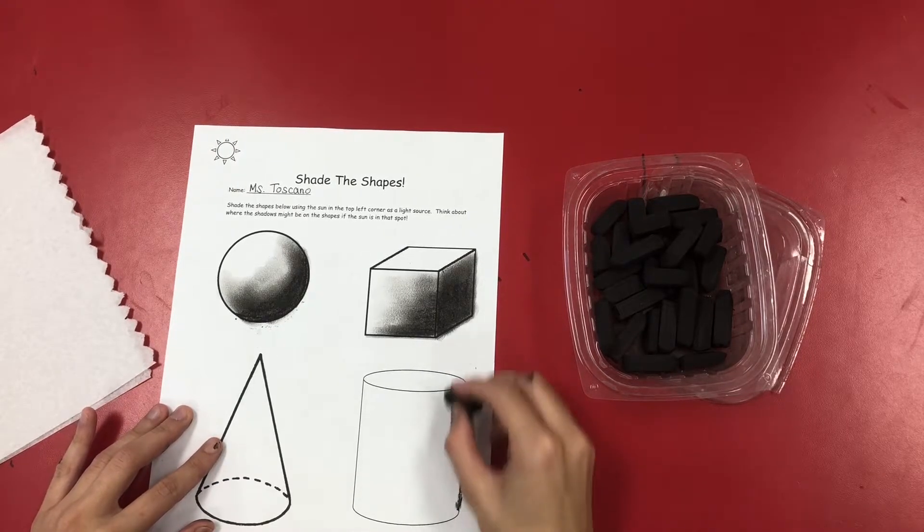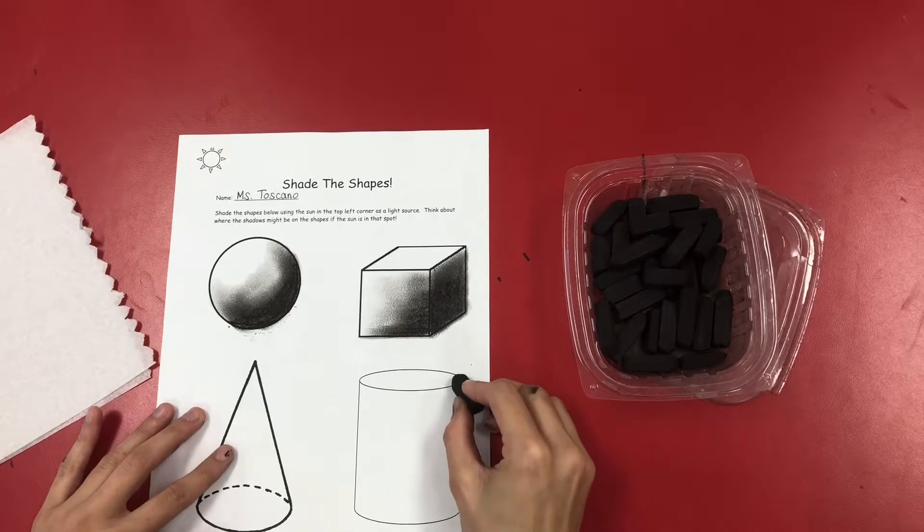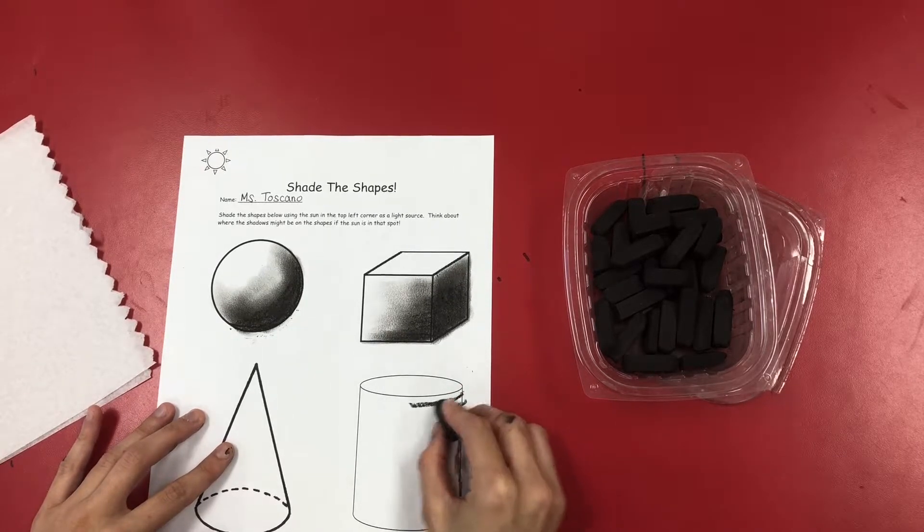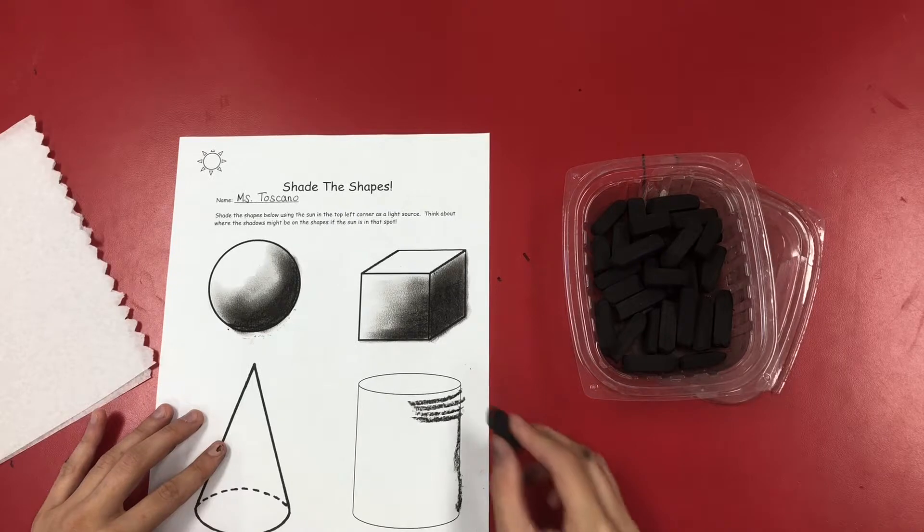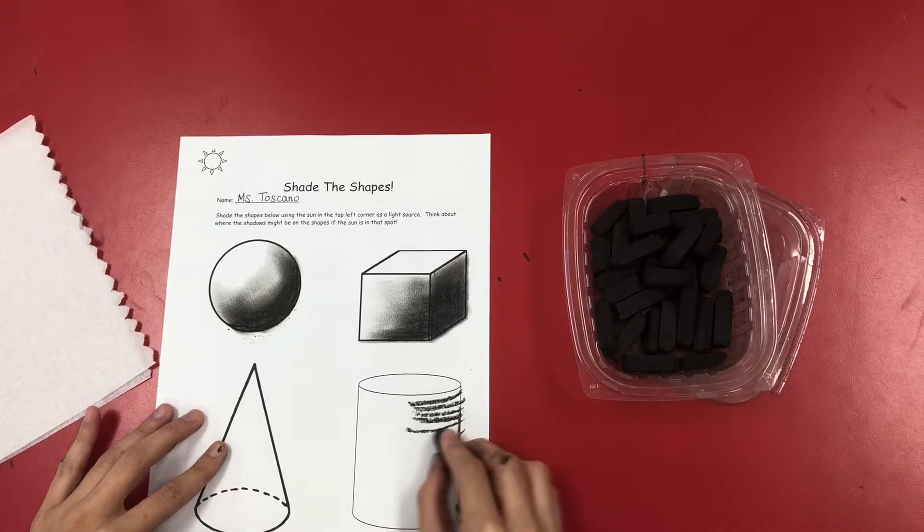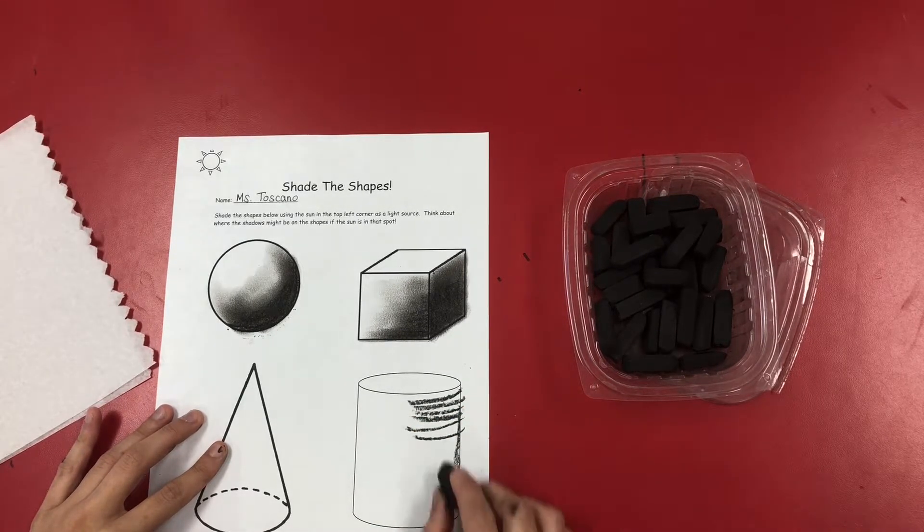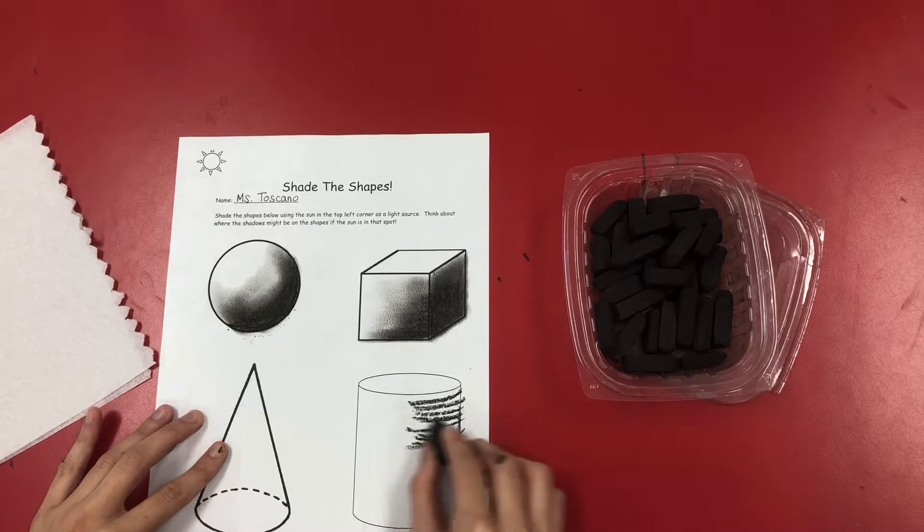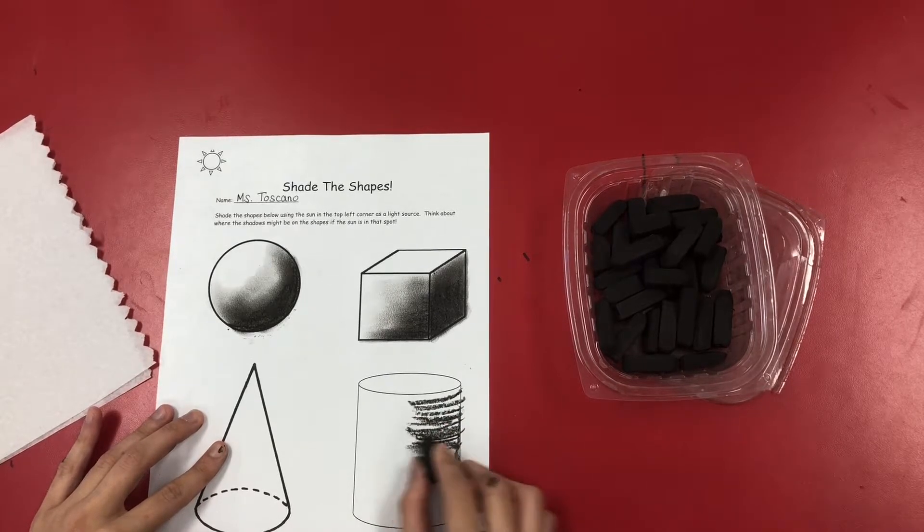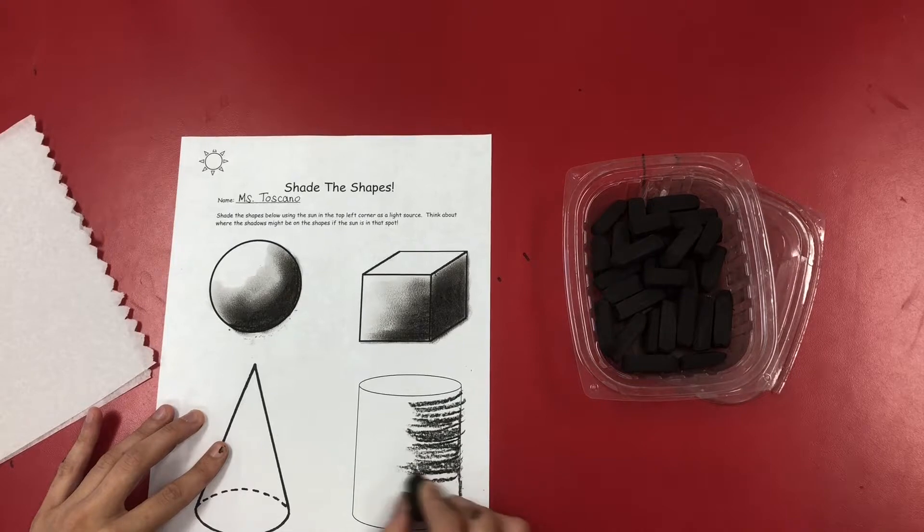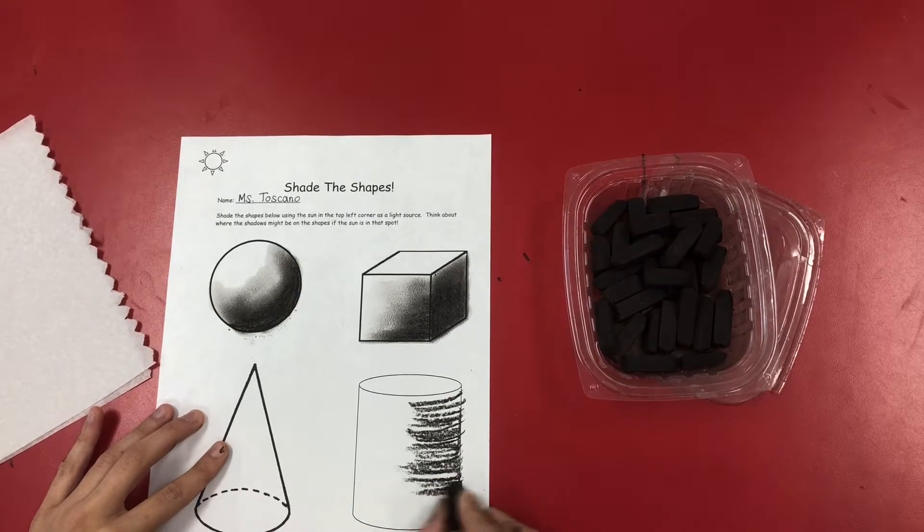Instead of just drawing up and down, I'm going to actually go with the shape of my cylinder, which are almost curved lines. You can see how I'm curving them a little bit, and I'm going to put them close together. So they're not straight across—they're curved just a little bit.